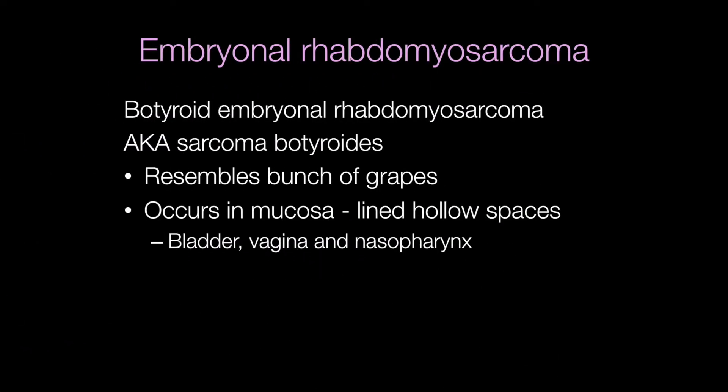When embryonal rhabdomyosarcomas arise in hollow viscera covered by mucosa, for example the bladder and vagina, the unrestricted growth can result in an appearance similar to a bunch of grapes, hence the term botryoid embryonal rhabdomyosarcoma or sarcoma botryoides.